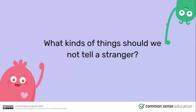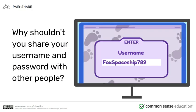The kinds of things you don't tell a stranger — if you were walking down the street and a stranger approached you and asked you where you live, you wouldn't answer with your address. You would walk away politely and find a trusted adult, a parent or a neighbor, to help you, because you don't want to give strangers that kind of information. It's the same thing online. If you wouldn't tell somebody that information in person, then you wouldn't put it online either.